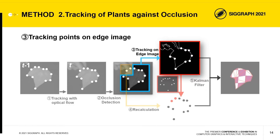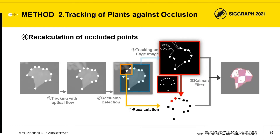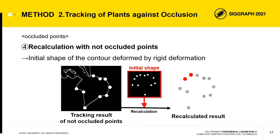The next process is tracking points on an edge image. Non-occluded points are tracked on the edge image, and these points are calculated to maintain the initial shape. The next process is recalculation: occluded points are recalculated using non-occluded points as control points. The initial shape of the contour is deformed by rigid deformation, and the results of this deformation are the tracking results of the occluded points.